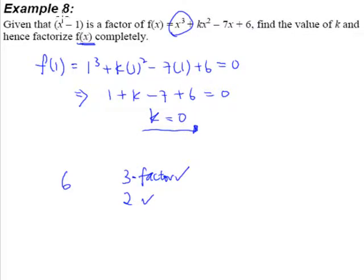So now, because we know that x minus 1 is a factor, by right, we should be able to find the other factors. So how do we do that?